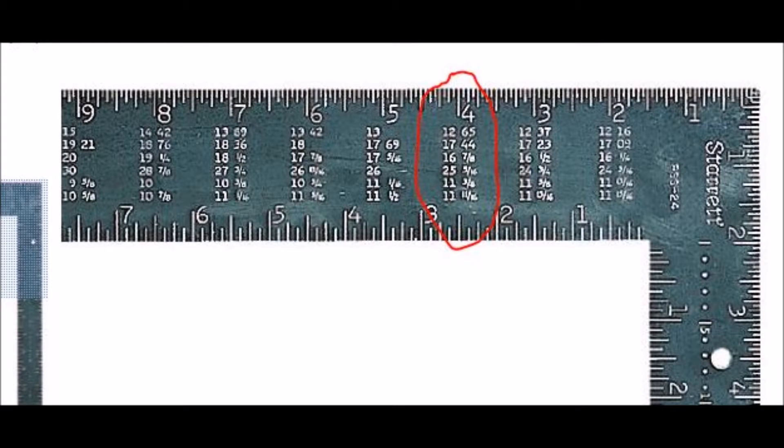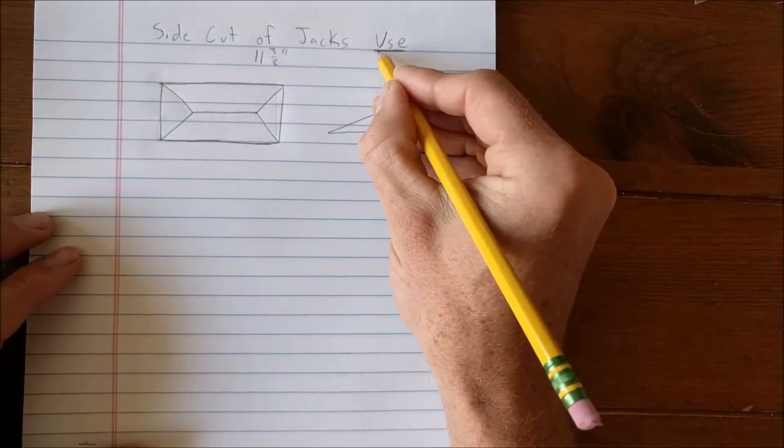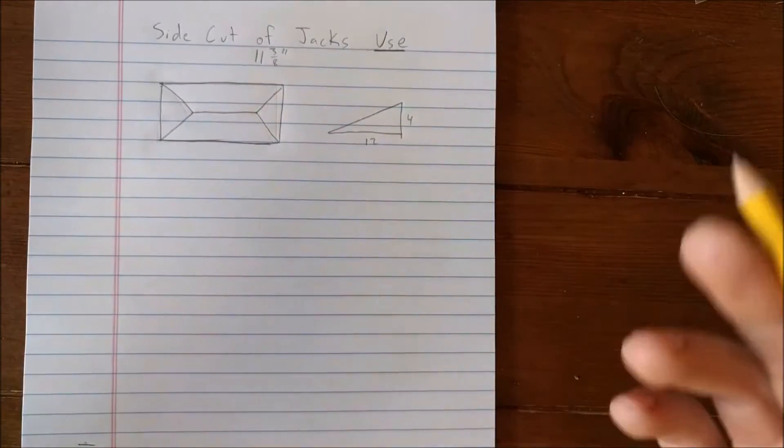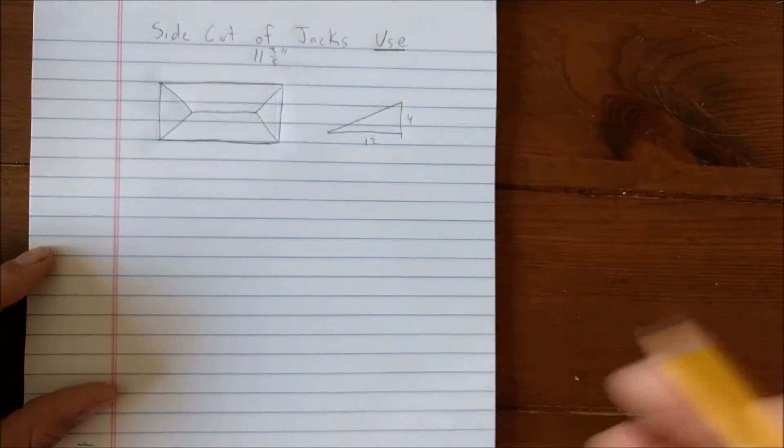We'll be using our same 4 and 12 pitch hip roof. We're under the 4 inch mark on the framing square. In this video, we must match the numbers 11 and 3 eighths and 11 and 11 sixteenths. Side cut of jacks use 11 and 3 eighths inches. I've underlined use because we'll actually be using at least a virtual version of the framing square in order to reproduce this number 11 and 3 eighths inches.